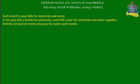Each month Lee pays bills for electricity and water. If she pays $36 a month for electricity — observe, this is $36 a month — and $720 a year for electricity and water together. This is $720 a year. Observe that this amount is per year, while the electricity figure was given per month.